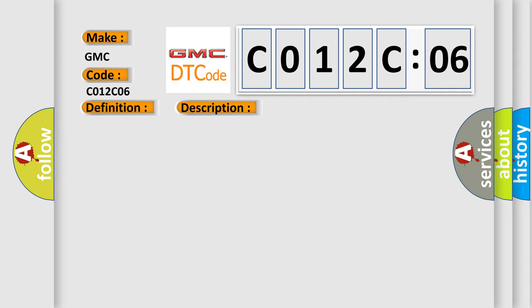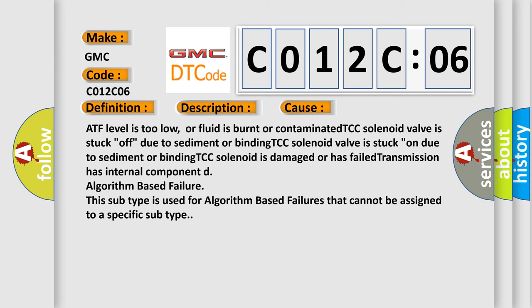This diagnostic error occurs most often in these cases: ATF level is too low, or fluid is burnt or contaminated; TCC solenoid valve is stuck off due to sediment or binding; TCC solenoid valve is stuck on due to sediment or binding; TCC solenoid is damaged or has failed; transmission has internal component algorithm-based failure. This subtype is used for algorithm-based failures that cannot be assigned to a specific subtype.